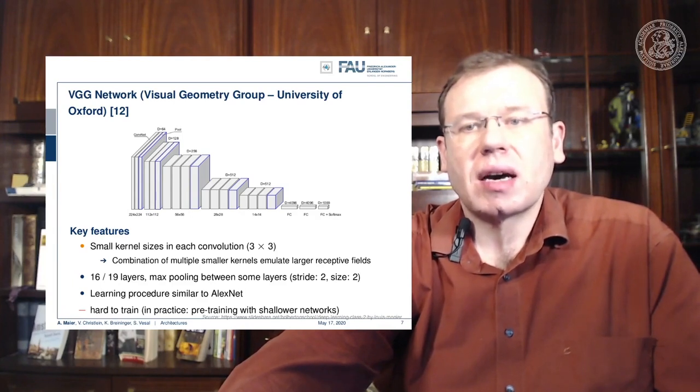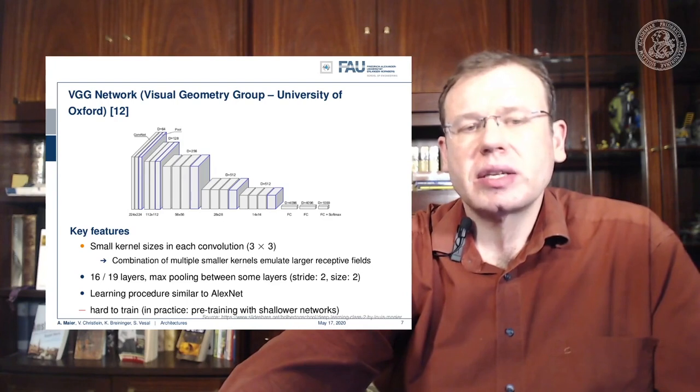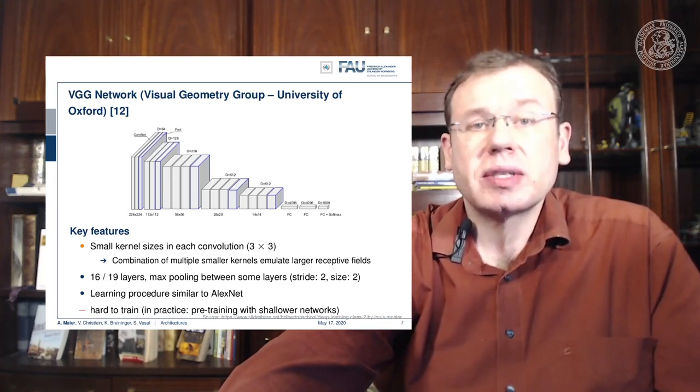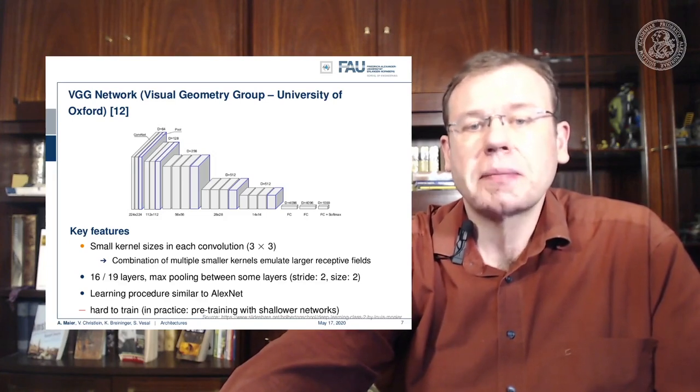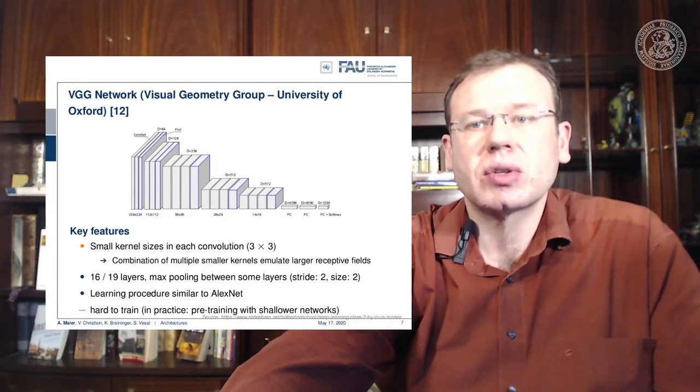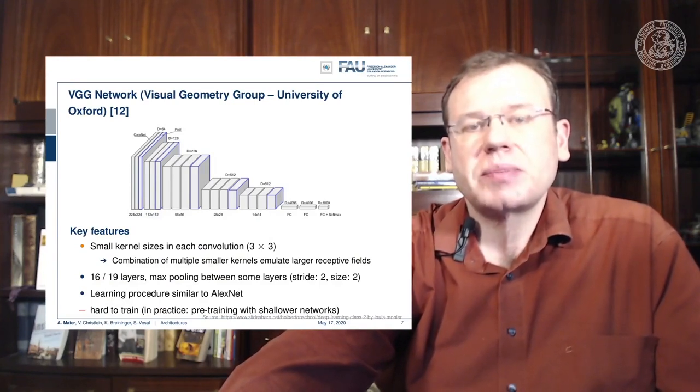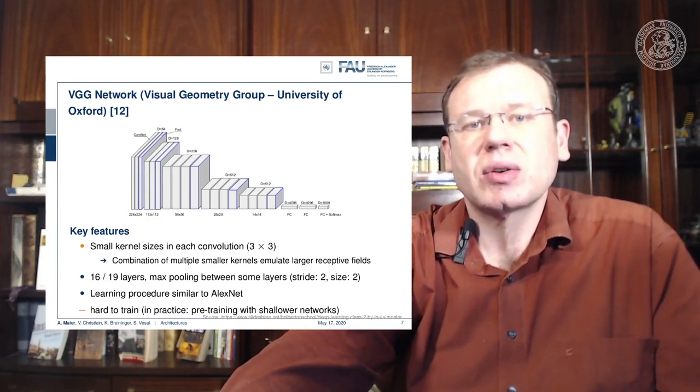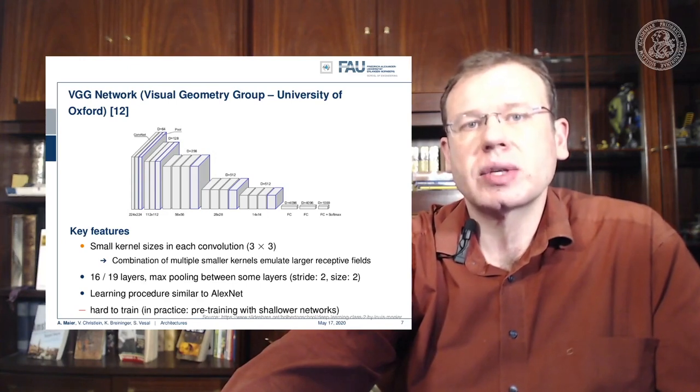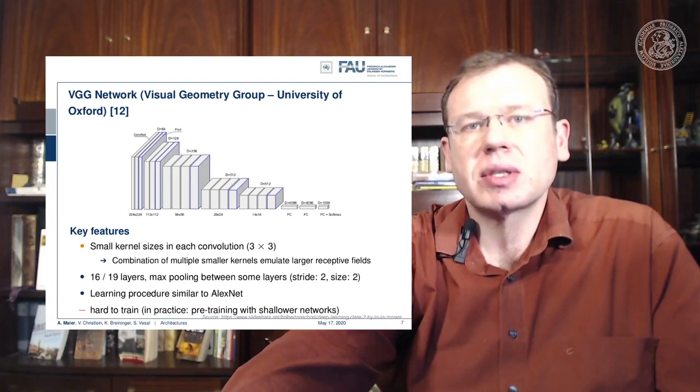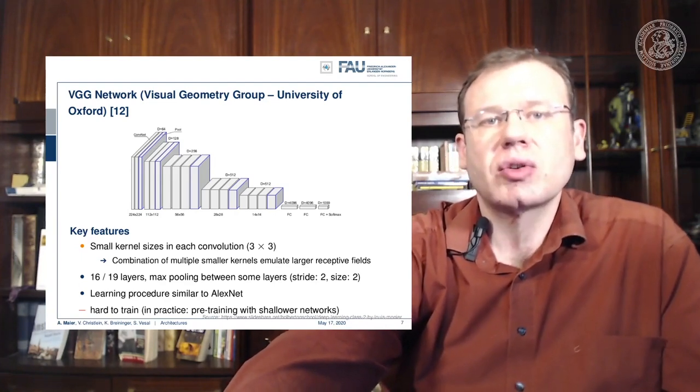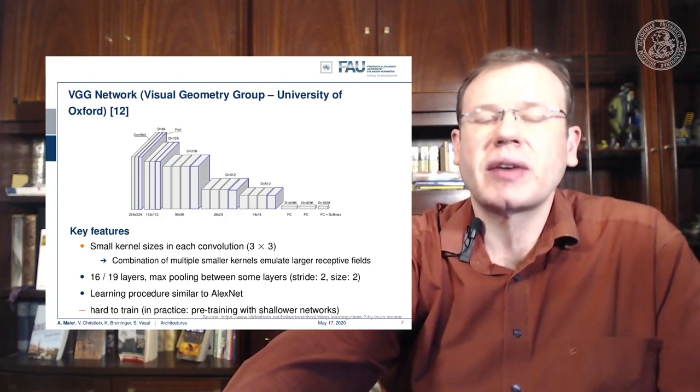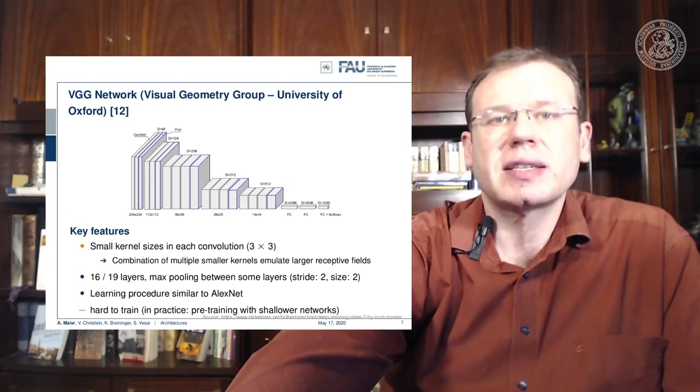The small kernel sizes are the key feature that are still used. It was typically used in 16 and 19 layers with max pooling between some of the layers with stride 2, size 2. The learning procedure was very similar to AlexNet but turned out to be hard to train in practice. You needed pre-training with shallower networks. The network is not so great in terms of performance and has a lot of parameters, but it's pre-trained and available. This has caused the community to adopt this quite widely. When you work with open source and accessible software, parameters, trained models, and source code can be shared.